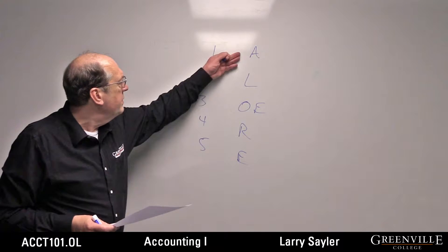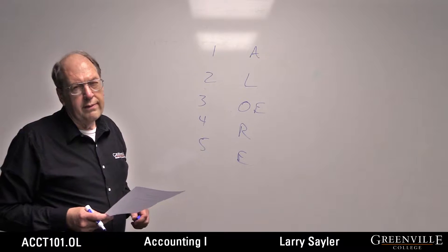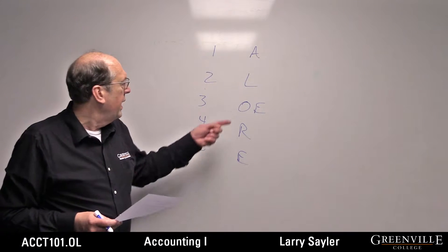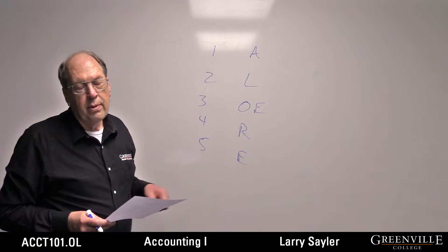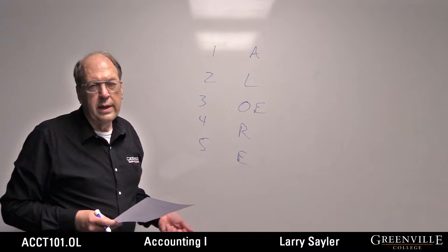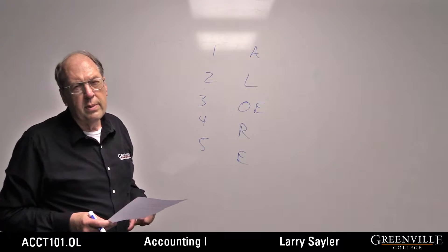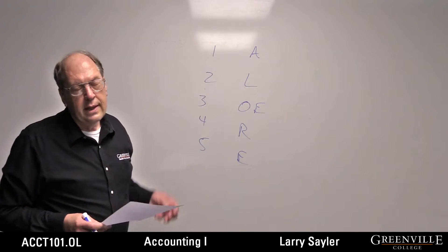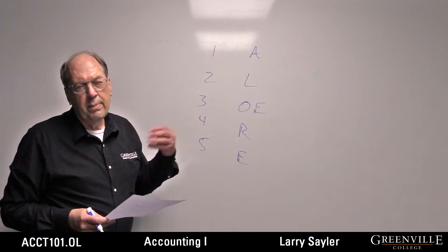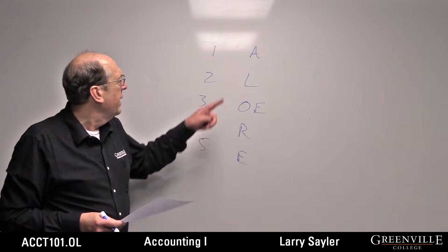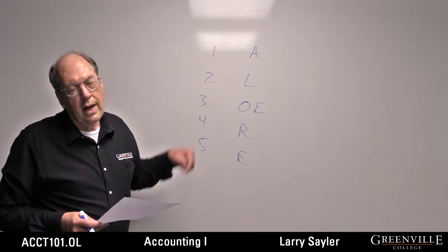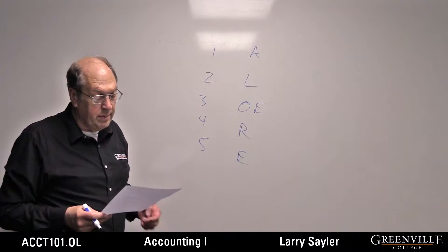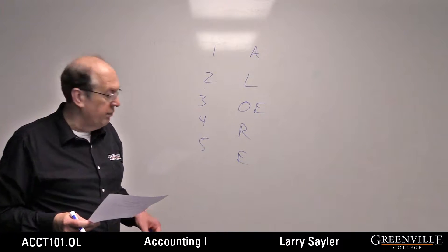So: assets, liabilities, owner's equity, revenue, and expenses. Capital is used when the owner puts money in. Drawing is when the owner takes money out. Accounts receivable is an asset — it's a list of people who owe money to us. Accounts payable is a liability — a list of people we owe money to.